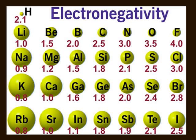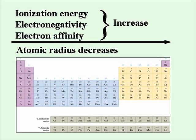Electronegativity is the measure of the desire an element has to gain electrons when it is combined in a compound. The smaller the atom, the greater its desire to gain electrons and pull them away from other atoms that it is bonded with. As atomic radius decreases, it becomes harder to lose electrons and atoms choose to add electrons to their orbitals to become stable. When atomic radius increases, atoms tend to want to lose electrons to become stable.